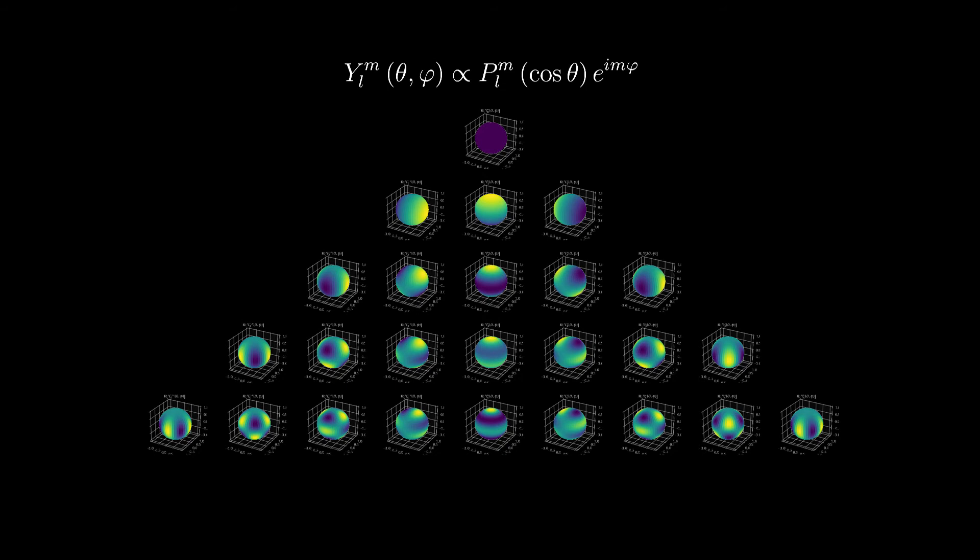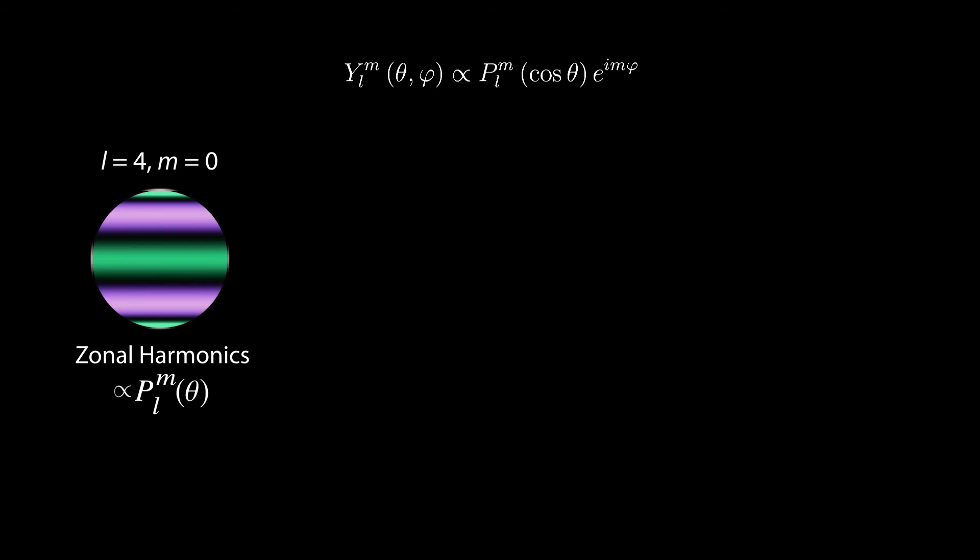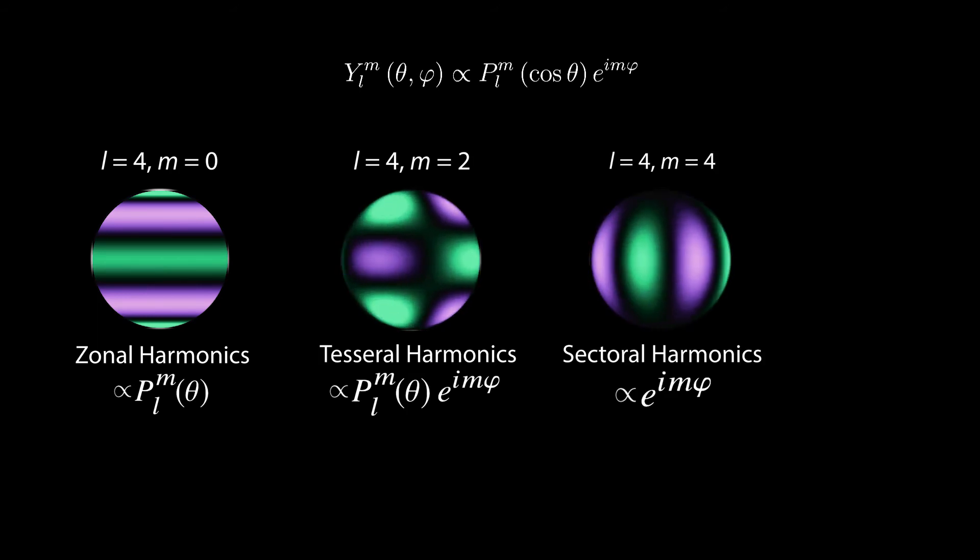These basis functions can be split up into three distinct types: zonal, tesseral and sectoral harmonics, which depend on the spherical harmonic order L and rank M.